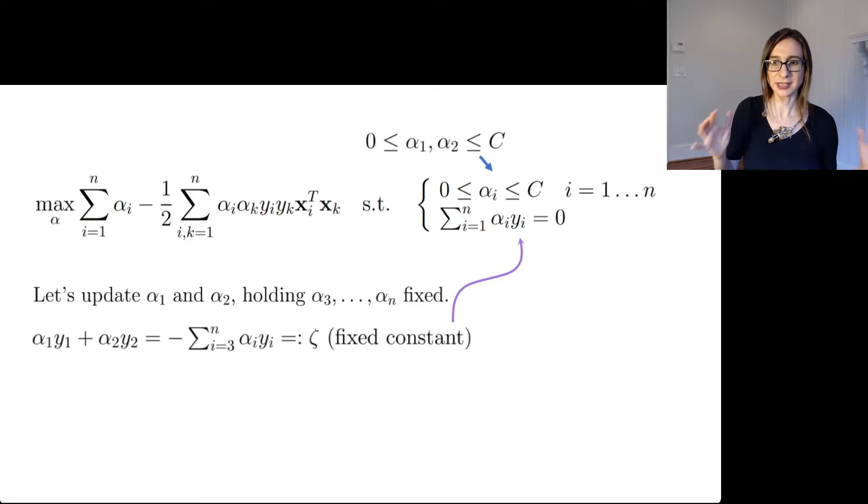And I'll call that zeta. I guess I'm really in the mood during these lectures to create squiggly Greek letters. So zeta. Anyway, so that's a fixed constant because again, we're assuming that just in this iteration, we're only allowed to adjust alpha 1 and alpha 2. And later on in other iterations, we'll adjust other alphas. But here, just alpha 1 and alpha 2.